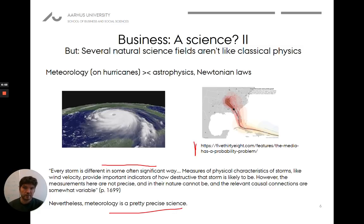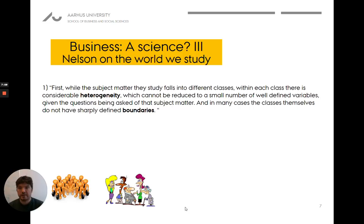Physics shouldn't be used as a prototype for all kinds of sciences, because even other natural sciences aren't as precise. We can't make the clear causal predictions that we can in physics. This brings us to a key slide and three key elements of the Nelson paper. First, what he's trying to say is that the subject matter we study in social sciences falls into different classes, and there's heterogeneity in each class.